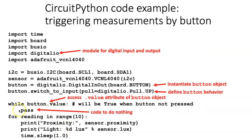Within the indented code block of this first while statement is the command pass. This is a Python command that does nothing. It seems silly, but that's exactly what we want the script to do — nothing until we press the button. So the script will start running and not collect any data until the button is pressed. Once pressed, it takes 10 measurements and ends.